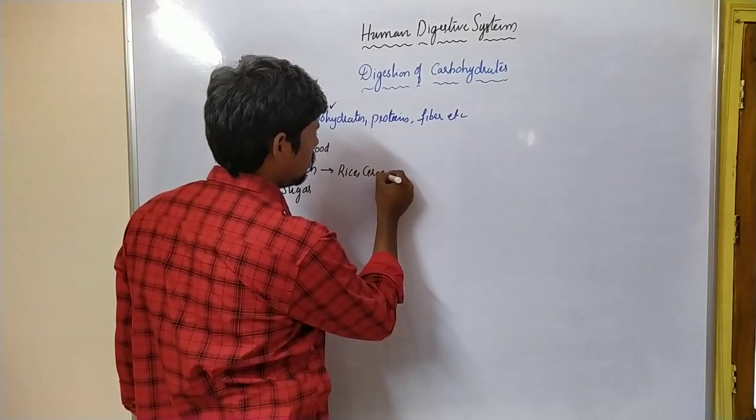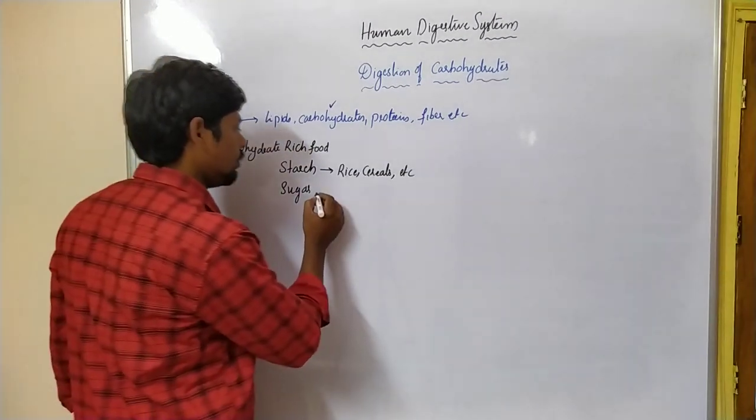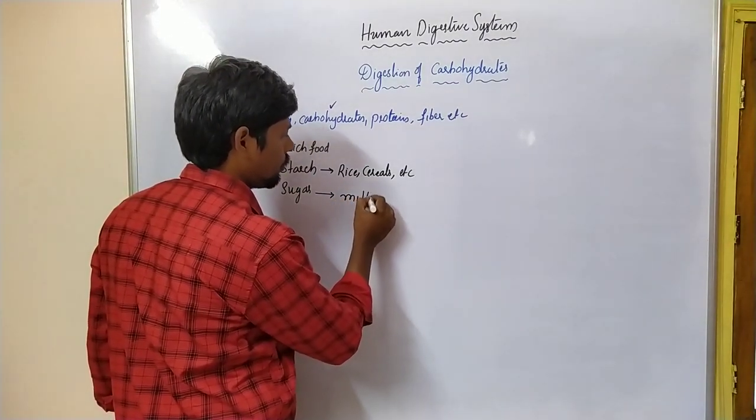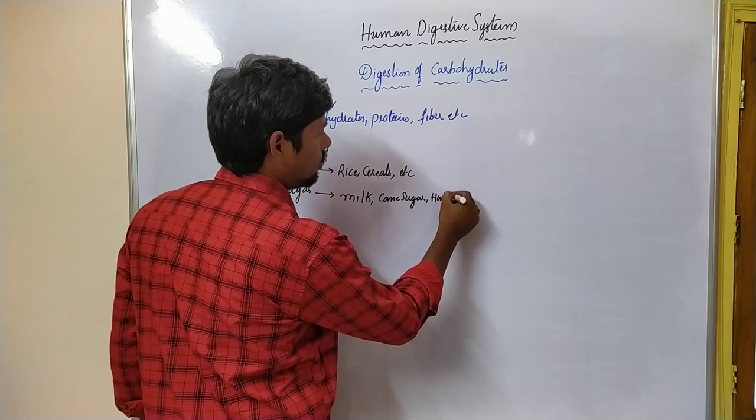If you take carbohydrate-rich food, it contains starch and sugars. Starch is present in rice, cereals, etc. Sugars are present in milk, cane sugar, honey, and jaggery.